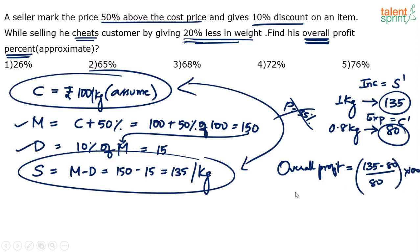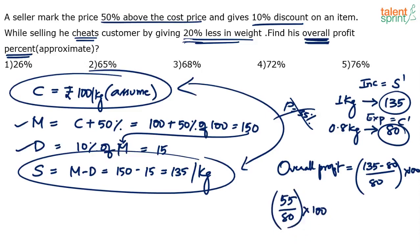Do the calculation. What is 135 minus 80? It's 55. So the final answer is 55 by 80 into 100. This is like: 55 is what percent of 80? x by y into 100.